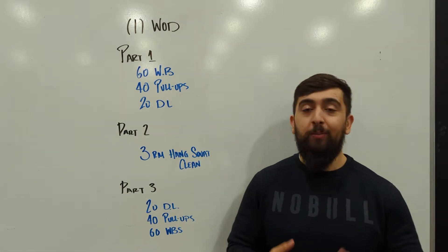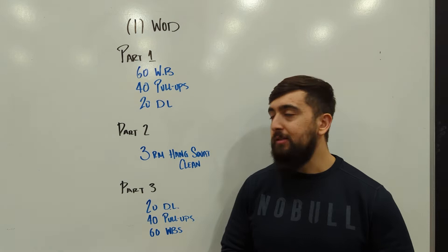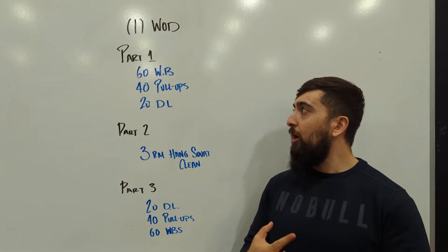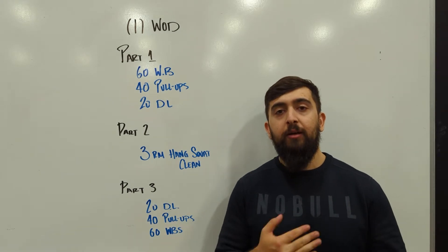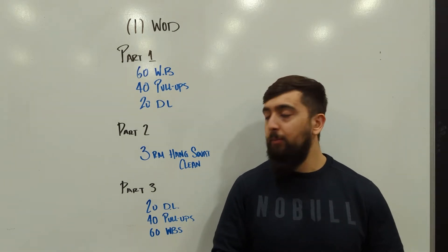So to start off, part one, zero to 10 minutes. You have 60 wall balls, 40 pull-ups and 20 deadlifts for time. Once you finish that, you can rest until that 10 minute mark.